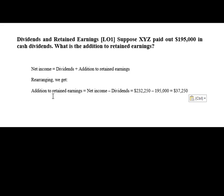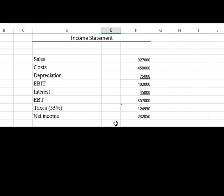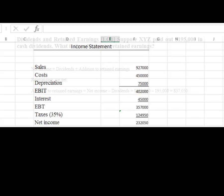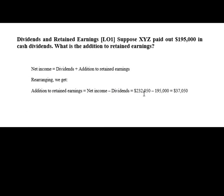I'm going to rearrange this: addition to retained earnings is what we are looking to solve, and it equals net income minus dividends. The net income was $232,050. So $232,050 minus $195,000 equals $37,050. So when looking for retained earnings, all it is is net income minus the dividends.